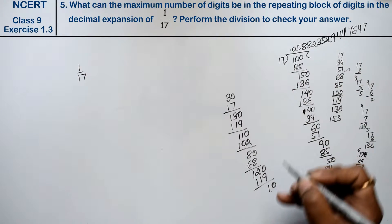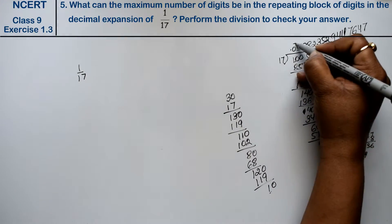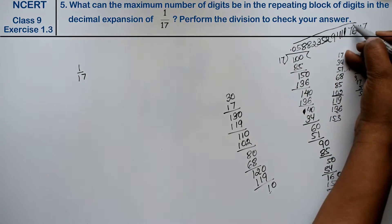Again, now see, from here the same 10 came again, right? See, then 0 will come again. This means the pattern repeats from here. This is the answer.